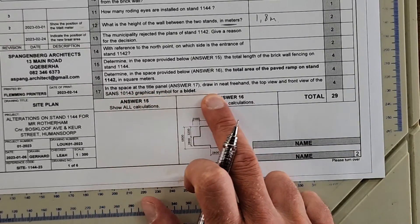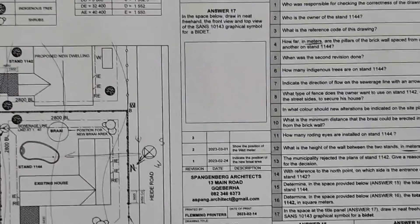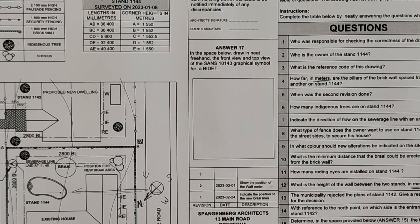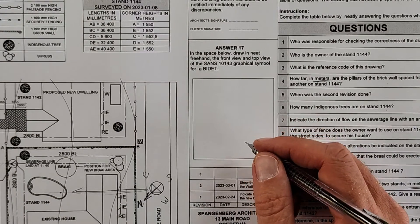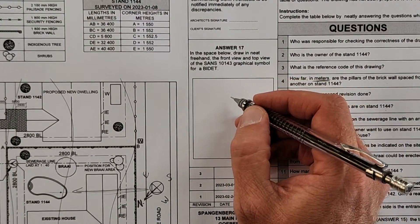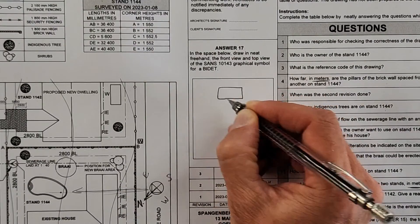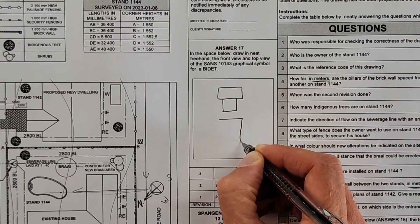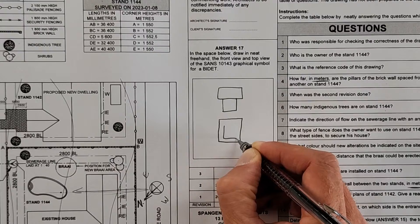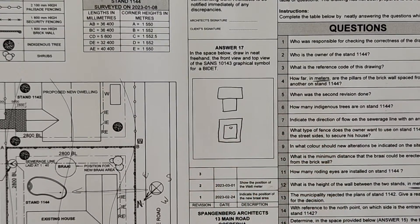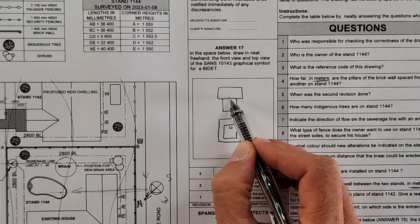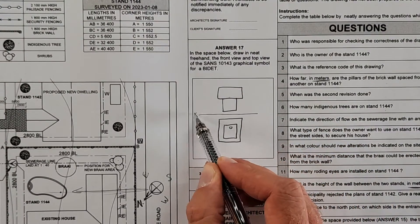The last question: in the space provided, draw a neat top view and front view of the graphical symbol for a bidet. It's first-angle orthographic projection. The front view is like this, and the top view is placed below it. You could include the XY reference line as well.